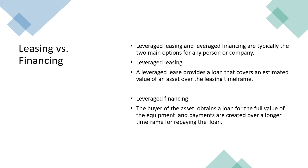Leasing and financing are the two options available to a company. The company has to decide whether to finance the asset or to lease it. If the company wants to purchase the asset, it is called leveraged financing. A leverage lease provides a loan that covers the estimated value of an asset over the leasing timeframe, whereas in leveraged financing, the buyer obtains a loan for the full value of the equipment and repays it over a longer time frame.